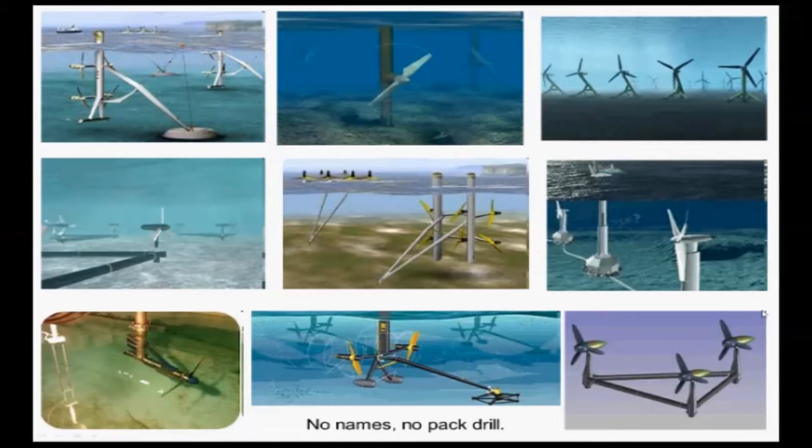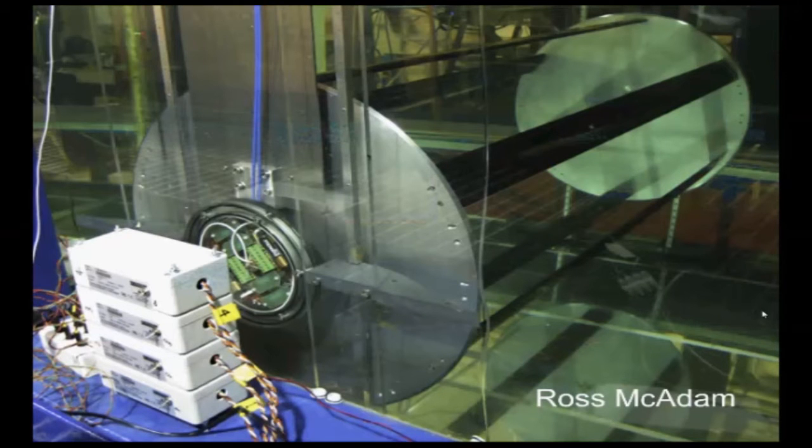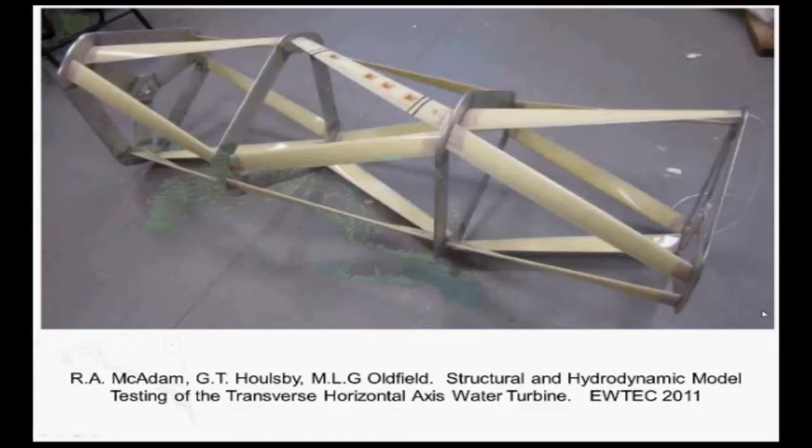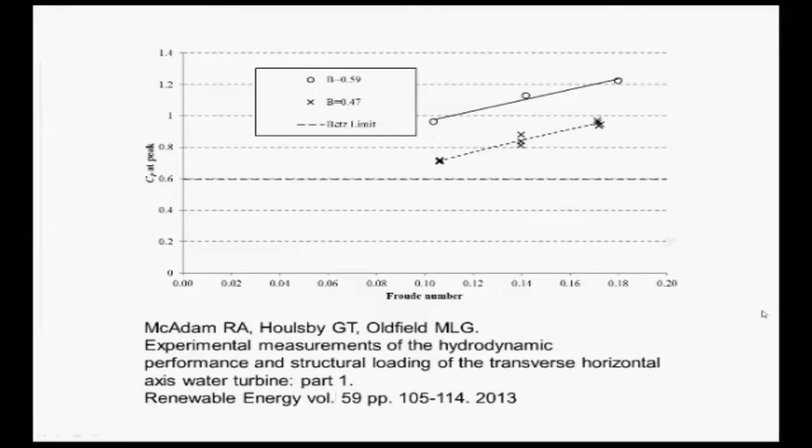A chap from Oxford called Ross Macadam did a very nice experiment for a PhD. He's got some blades going across here spinning about this axis, measuring all sorts of good things. And he finds out that this Betz limit thing is complete rubbish. This one's got helical blades, gives a very nice torsionally stiff structure, very attractive, gives you a very smooth power output.